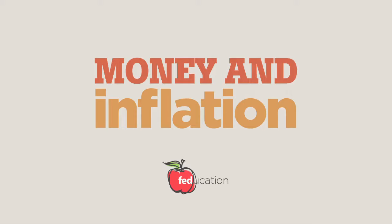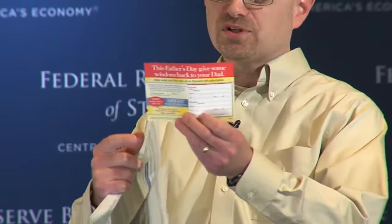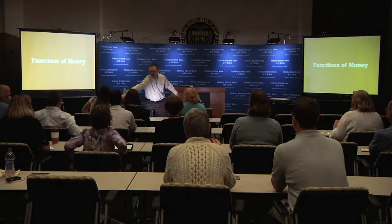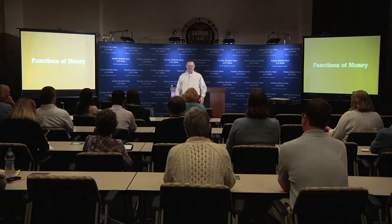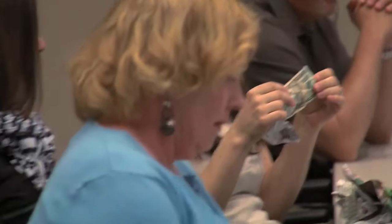Our first topic was money and inflation, and we began by comparing three separate yet similar items: the front page of the Wall Street Journal, a subscription card to The Economist magazine, and a $20 bill. I asked the audience to compare these three types of paper, then crumpled everything together into a ball and asked for a volunteer to throw it away. As expected, the volunteer wanted to keep the $20, and she promised to throw the rest away later. But why? What makes that type of paper — money — so special?